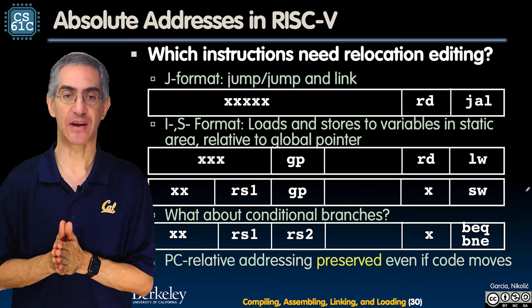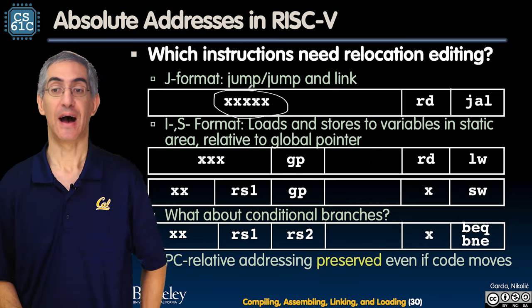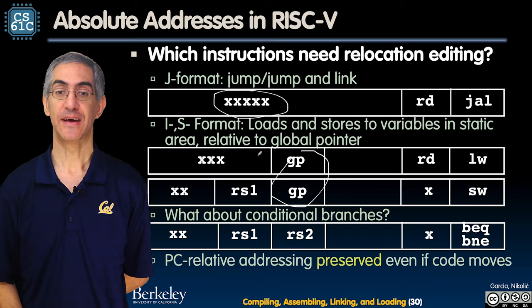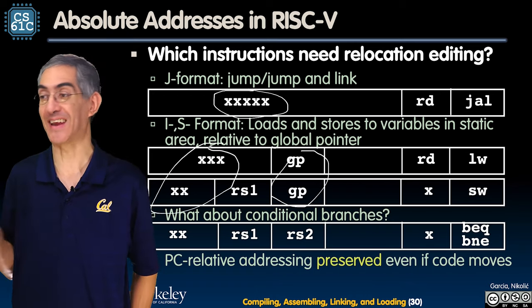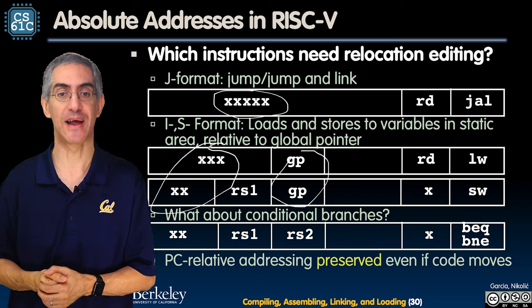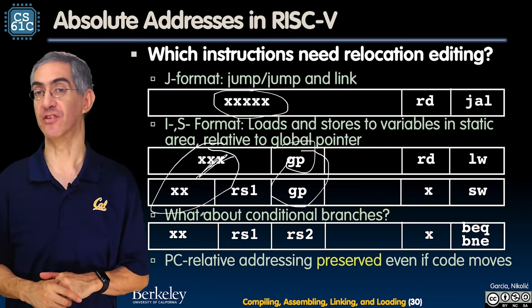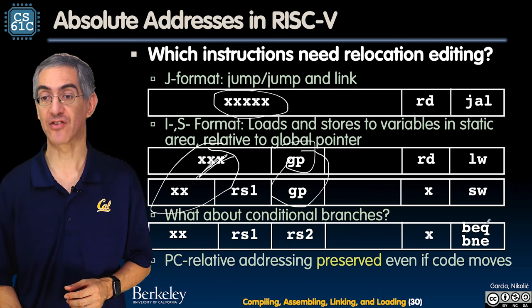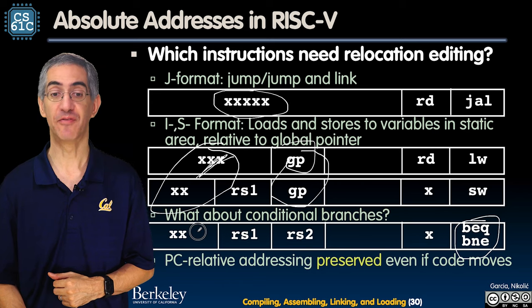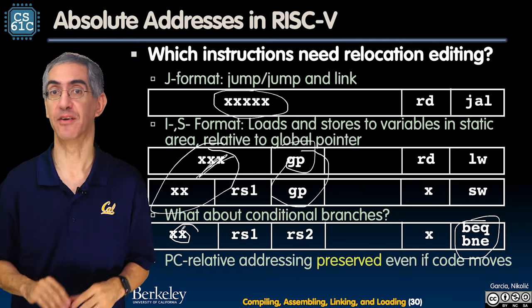Which instructions need relocation editing? Jump and link — all of those upper bits need to be modified. IS format instructions reference the static area via the global pointer, which points to the beginning of the static area; since I don't know where that is until everything is laid out, those values get filled in at link time. Conditional branches — branch equal and branch not equal — are all PC-relative, position independent code, so those are already filled in. No work needed there.